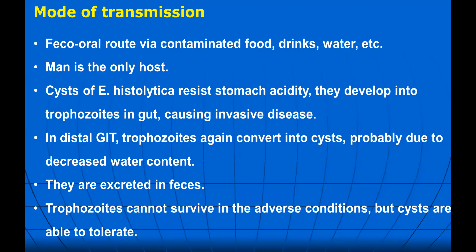The mode of transmission is contaminated food and drink. Man is the host. Cysts of Entamoeba histolytica resist the acidity of the stomach and develop into trophozoites in the gut, causing invasive disease. In the distal GI tract, trophozoites convert back into cysts due to decreased water and are excreted. Trophozoites cannot survive adverse conditions outside, but cysts are able to tolerate them. Outside the body the organism exists in cyst form with a protective layer.